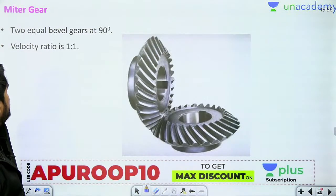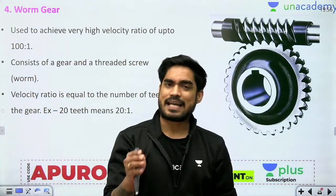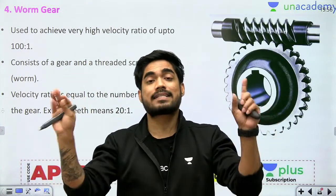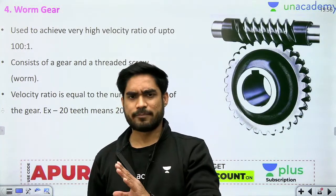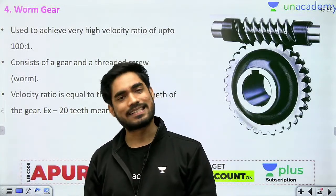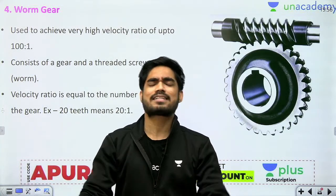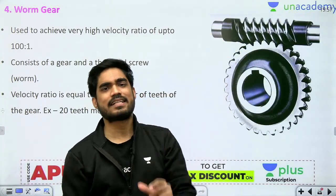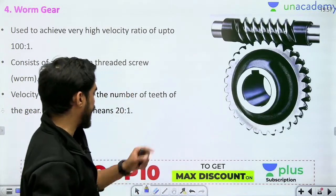The next type is worm gear — a very special type. In case of spur, helical, or bevel gear, the maximum speed ratio you can get is about 10:1. In spur gear it is about 6:1, in bevel gear about 3:1. The velocity ratio is inversely proportional to the ratio of diameters: N1/N2 = D2/D1. So to get a 10:1 ratio, one gear diameter would be 10 mm and the other 100 mm — already impractical. For 50:1, one would need to be 500 mm, which is clearly infeasible. That is why for very high velocity ratios we use worm gear.